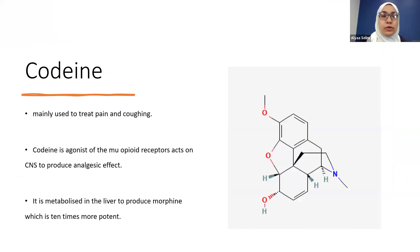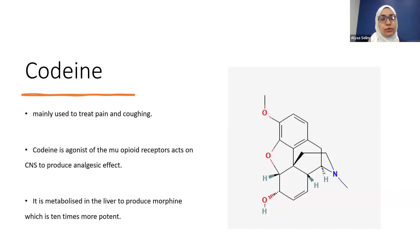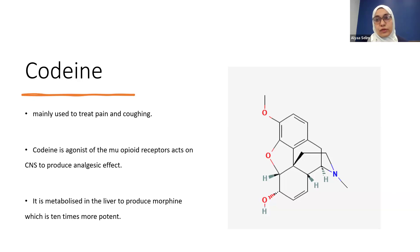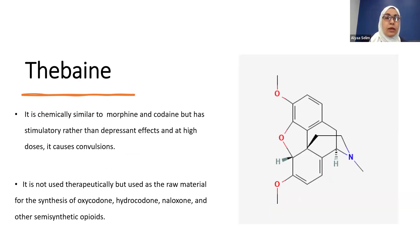The second alkaloid in opium is codeine, mainly used to treat pain and coughing. Codeine is an agonist of mu receptors and acts on the central nervous system to induce analgesia. Codeine can be metabolized in the liver to produce morphine, which is more active than codeine itself.